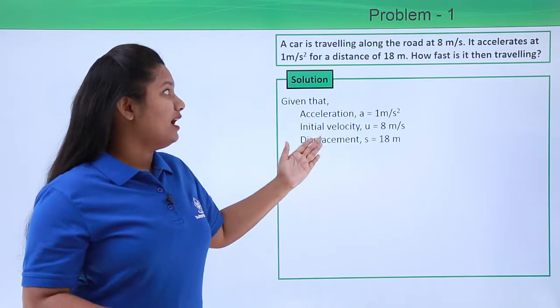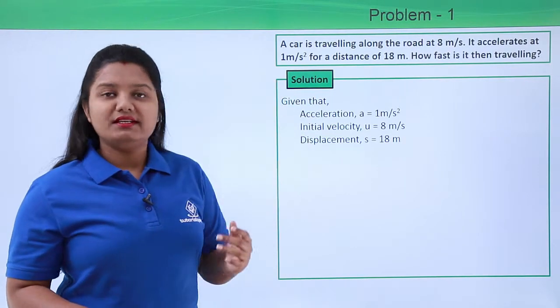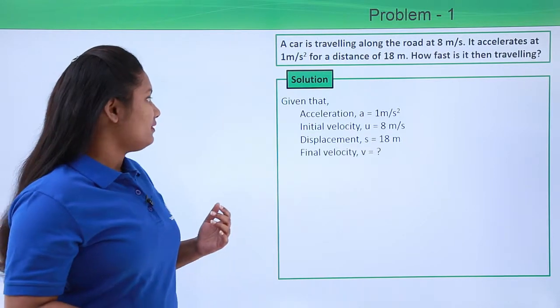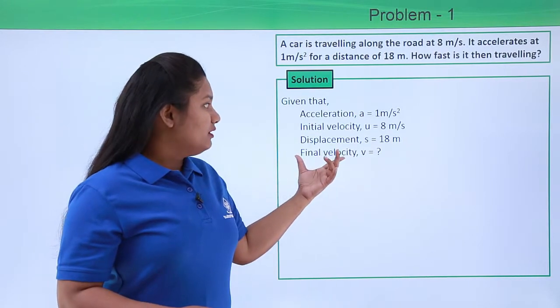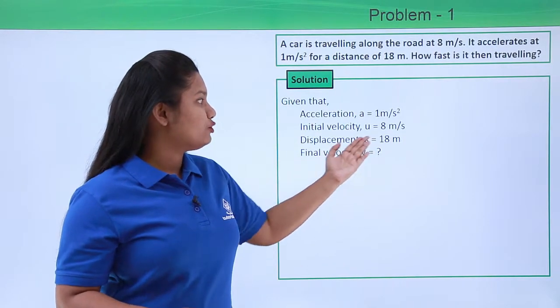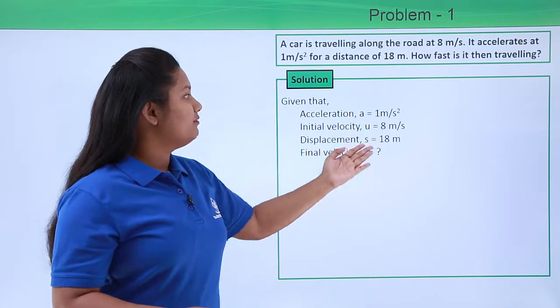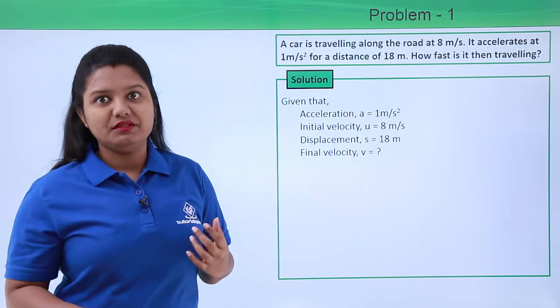Now from all this information, we need to find out what is the final velocity of the vehicle or the car. So the final velocity is what we are supposed to find out using all these three pieces of information that the question has given to us.